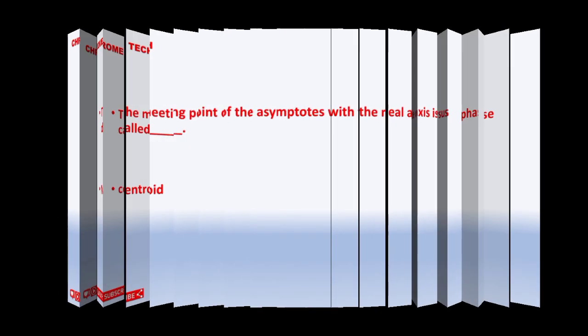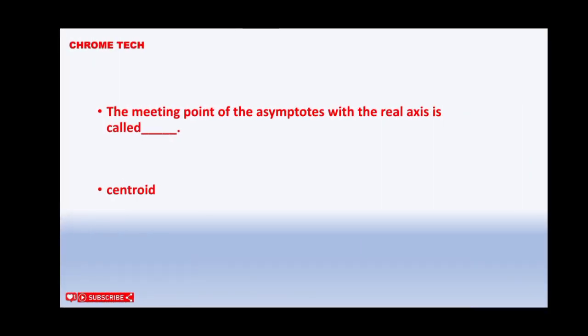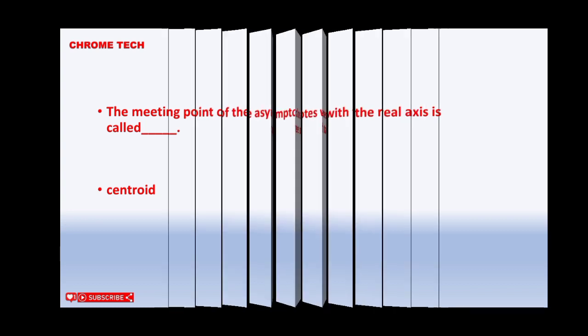Next question. The meeting point of the asymptotes with the real axis is called. Centroid is the correct answer.